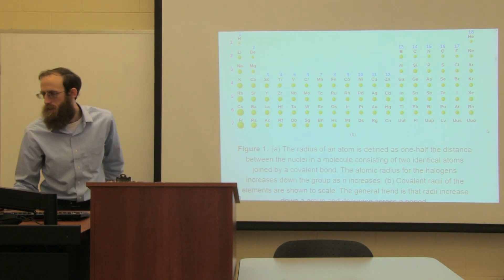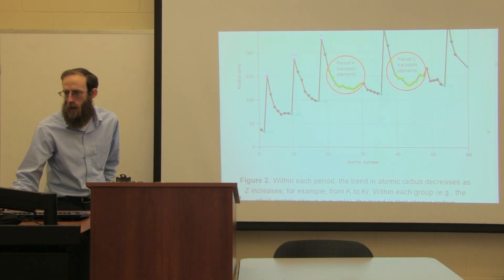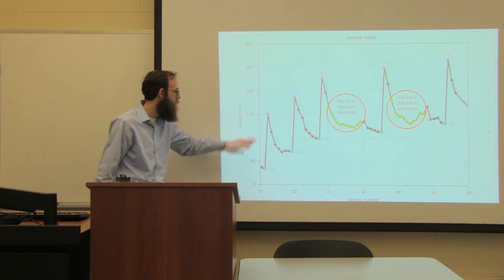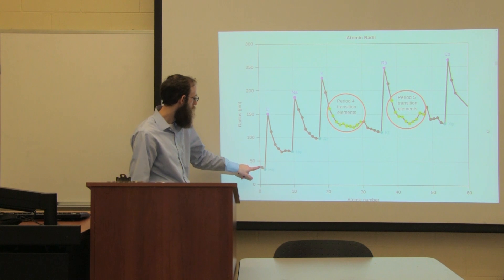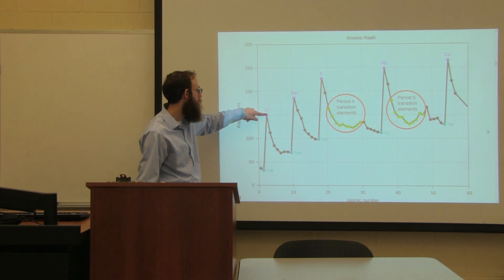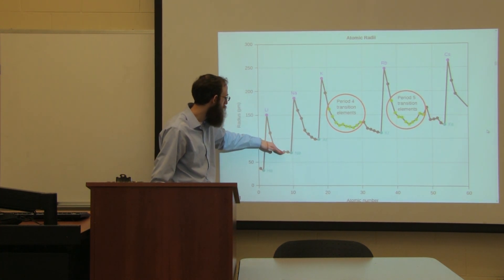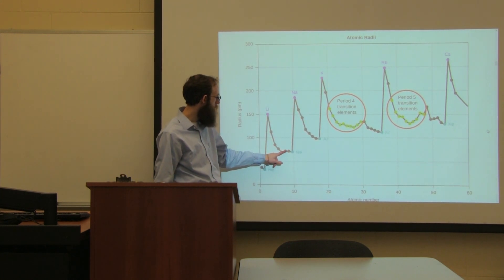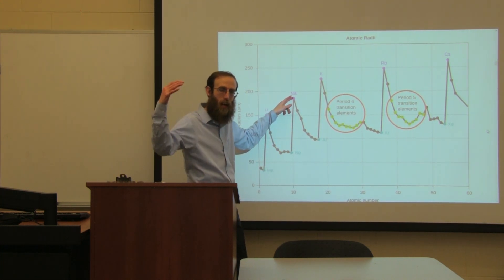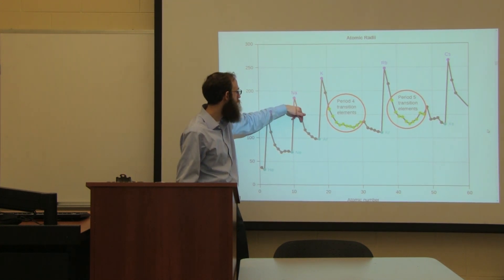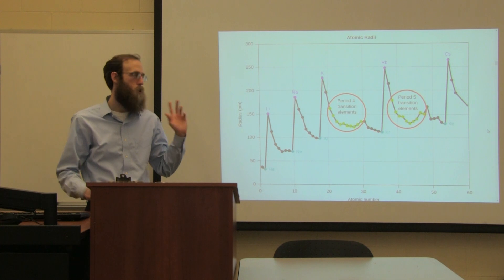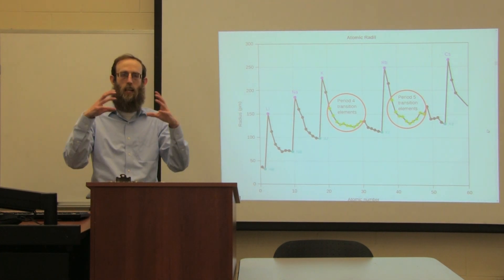Looking at the graph with radius size on the y-axis and atomic number on the x-axis, we see going from hydrogen to helium it's gotten smaller. Then it goes really big for lithium, and as we go across from lithium to neon, that size gets smaller. As we go from neon to sodium, it gets really big again - we've reached the next principal quantum number. Then it starts decreasing as we go across the row. The general trend: going down a column, atoms increase in size; going across a single row, they decrease in size.